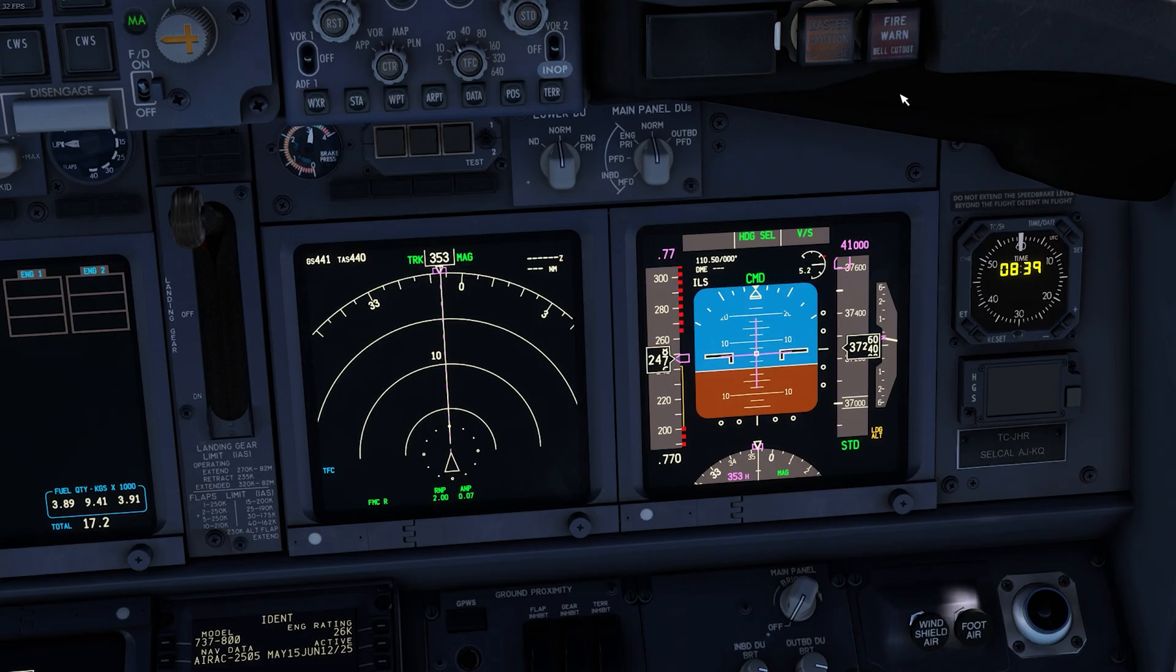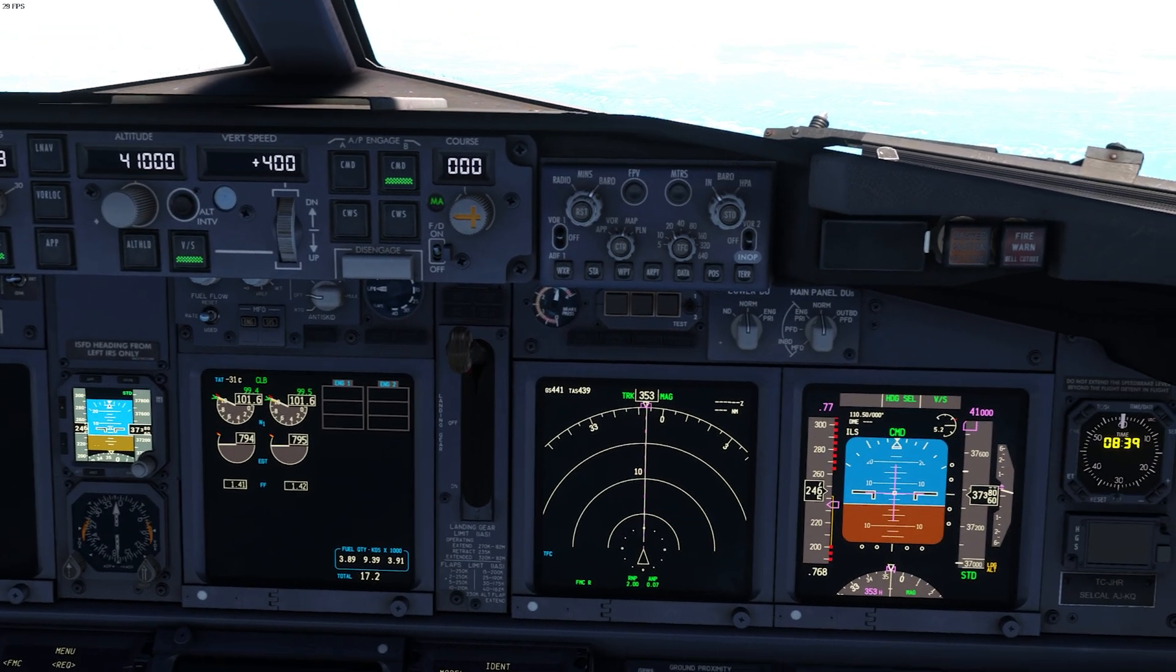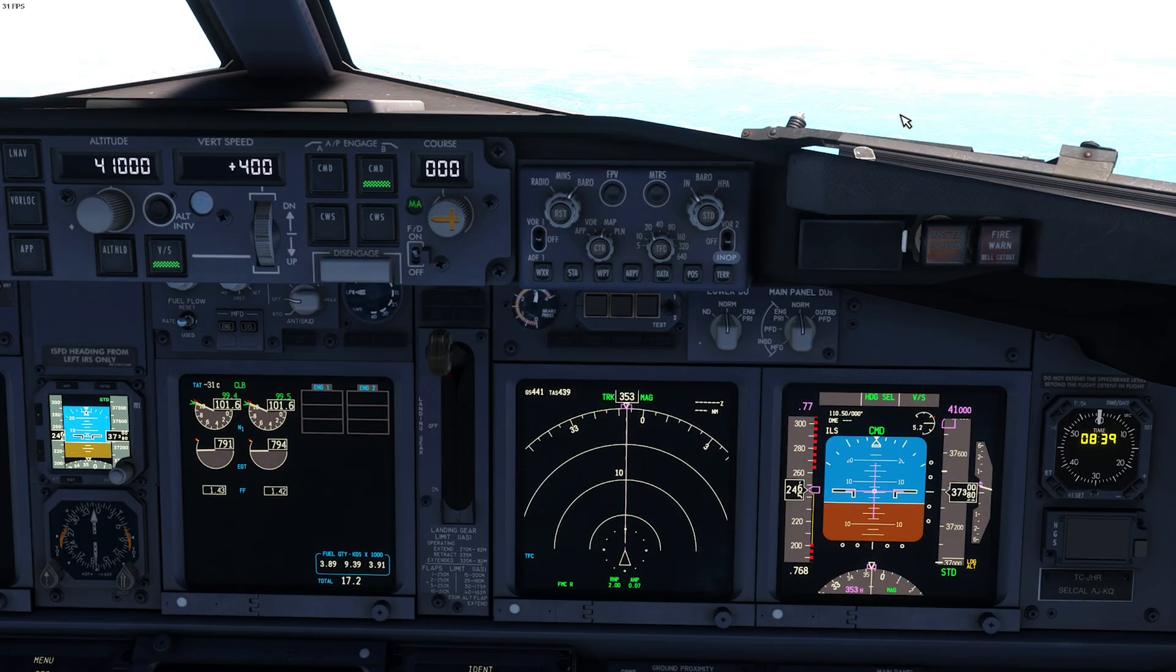Now, we are in the Boeing 737 simulator, and I will show you what is the coffin corner. As you can see now, we are flying at flight level 370, and speed range is getting narrower as we climb. I should maintain my speed and altitude to avoid coffin corner.